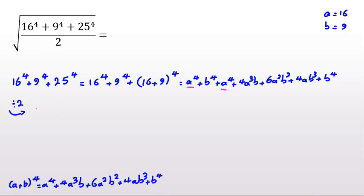So we have a to the 4, 2a to the 4 divided by 2 is a to the 4 plus 4a cubed b divided by 2 will be 2a cubed b. Next one is 6a squared b squared divided by 2 will be 3a squared b squared. And this one divided by 2 will be 2ab cubed. b to the 4 plus b to the 4, 2b to the 4 divided by 2 will be b to the 4.